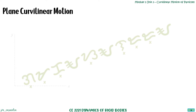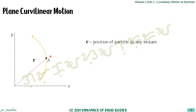For plane curvilinear motion, given the x and y axes, let's say we have particle A in our plane which will move along a path. The distance from the point of origin or our reference point to the position of A is what we call R, or the position of a particle at any instant. If the object is at a given point, the distance between that point and my reference will also be R depending on the time.